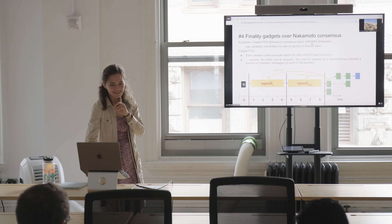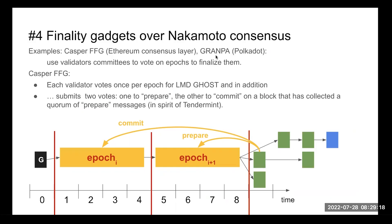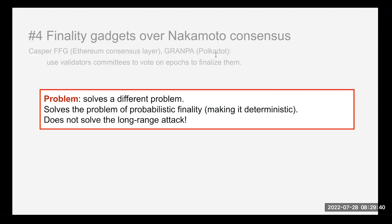However, if the old committee is compromised, the BFT finality gadget does not guarantee safety. You can still fork the epoch voting and create an alternative fork of epochs. You have to rely on the committee staying honest in perpetuity — so you're back to the same problem. Overall, finality gadgets are great ideas but they solve a different problem: they turn probabilistic finality into deterministic finality, but do not solve the long-range attack.